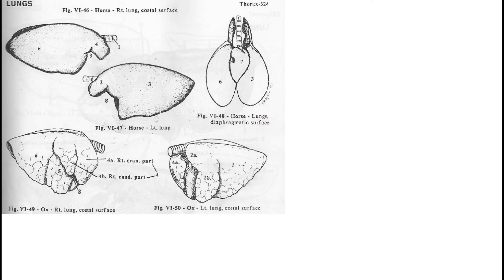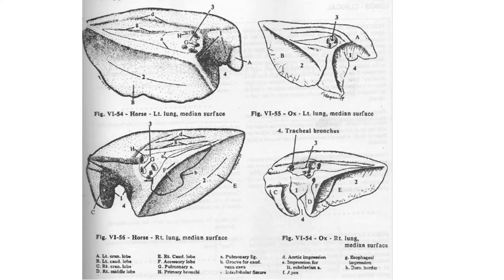Each lung contains two surfaces, two borders, a base, and an apex. There are two surfaces of lungs: one is the costal surface and the other is the mediastinal surface. The costal surface is convex and lies against the lateral wall of the thorax. It presents impressions of the ribs, known as costal impressions. The costal surface of lungs of ox is present laterally.